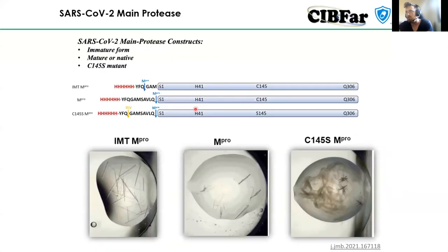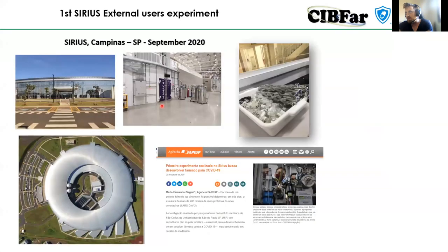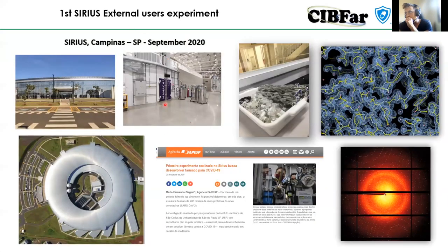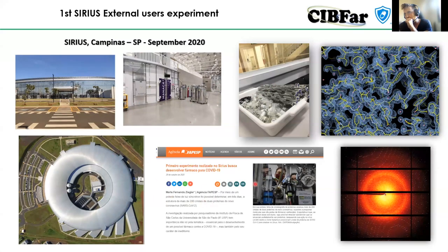We got crystals of all these protein forms to try to understand the structures. This was early in mid-2020 at the Brazilian synchrotron, which was still in commissioning with no robotics in place. We were invited to do the first experiment — a landmark for us, because it is a fourth-generation synchrotron. We saw five different forms of the enzyme.